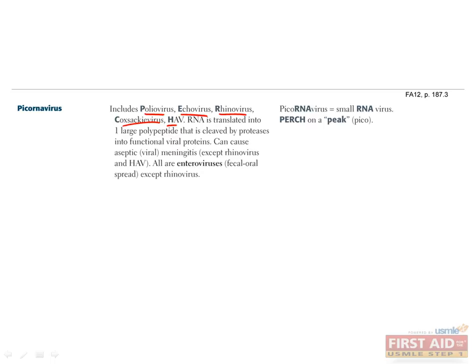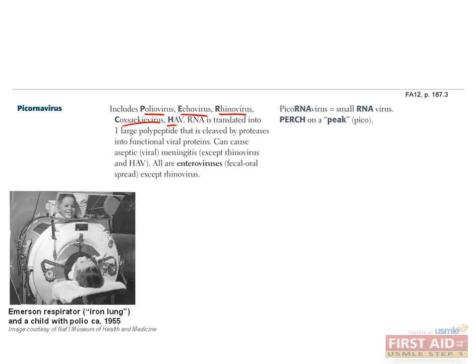Some patients can develop post-polio syndrome several years after resolution of the acute infection, which causes further muscle fatigue, weakness, and atrophy. By the early 20th century, poliovirus had caused major epidemics responsible for crippling thousands of people, mostly young children during the summer months. Thanks to the development of the polio vaccine in the 1950s, the number of polio cases per year has decreased dramatically, making it an almost unheard-of disease in the U.S. today.